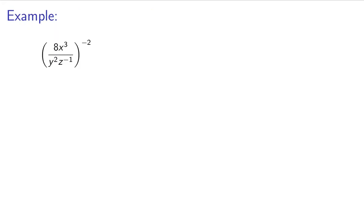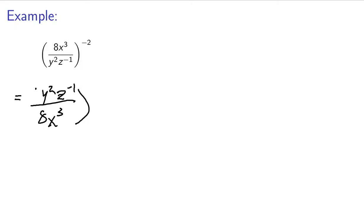So let's go ahead and go into the first example. I have 8x cubed all over y squared, z to the negative 1, all to the power of negative 2. Well, I see that negative exponent and I immediately think I can just go ahead and flip the fraction. That's the first thing I see. It doesn't really matter what order you do these in, though — as long as you do them correctly, you can use the rules in different orders and still come up with the same results. So I have y squared, z to the negative 1, all over 8x cubed. Now the whole thing is squared — I just flip the inside of the fraction.